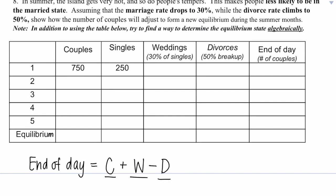So we'll start with the first one. To get the amount of weddings, that's 30% of singles wedding, that would be 75. And divorces, 50% of breakups comes from our couples, 375. So if we add together 750 plus 75 minus 375, we will get 450. This becomes our amount of couples for day two, 450.